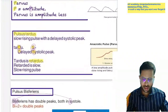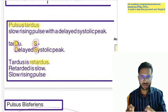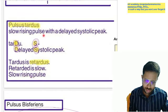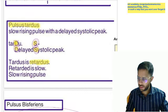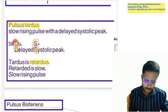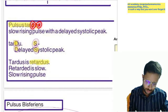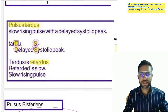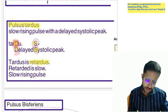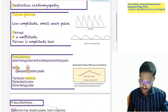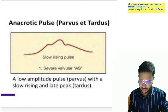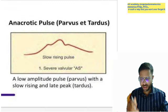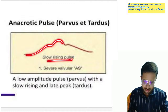Next is pulsus tardus. Tardus is pronounced like 'retardus' — retardus means slow. So this is a slow rising pulse with a delayed systolic peak. In the spelling of pulsus tardus: D for delayed, S for systolic peak. This is the anacrotic pulse — like the anaconda snake, a slow rising pulse.